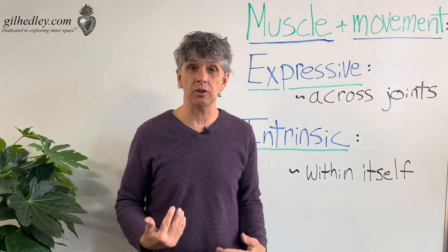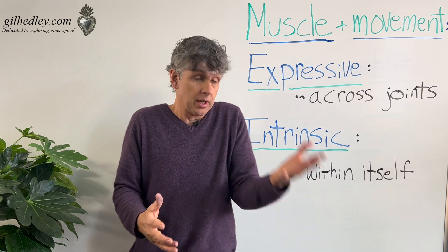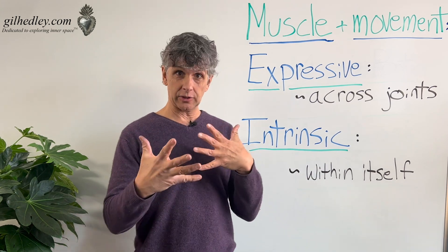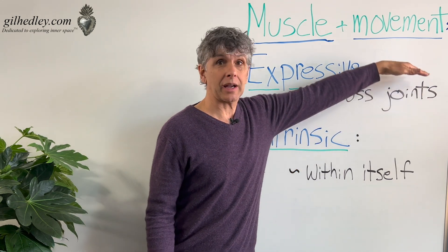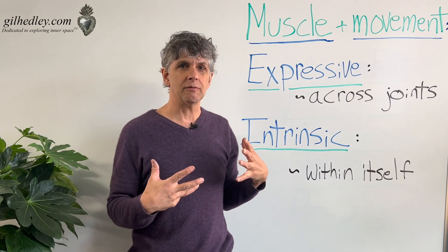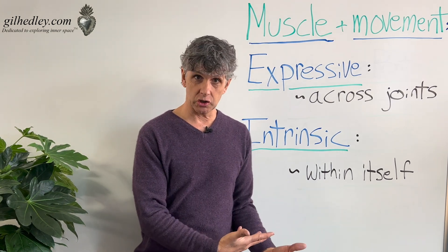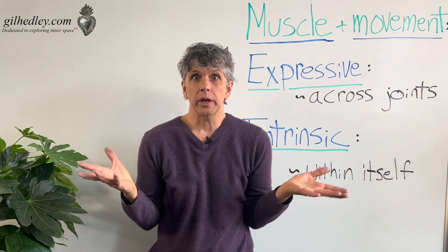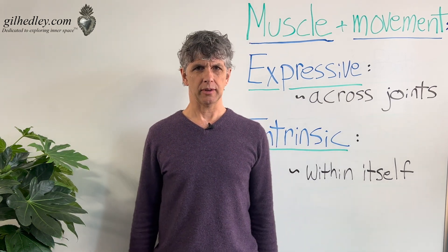Wherever there's a joint, muscle tissue crosses it, so that when that muscle tissue contracts, it moves the joints, and then comes the expression. That's one of the basic features of muscle movement — in crossing a joint, it enables expression of the skeleton in space to do all kinds of varied things, or socially proper things.